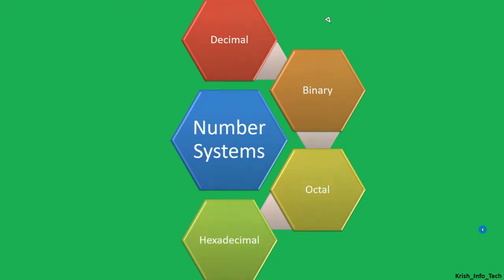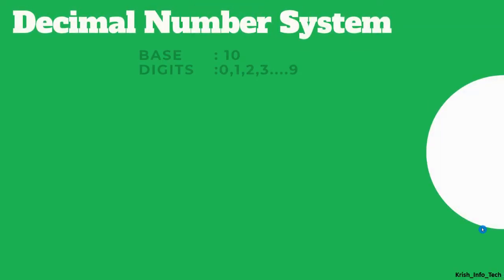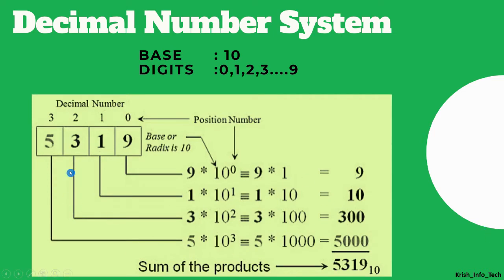Let us start with the decimal number system. The decimal number system has the base 10. For all these 4 types, we have some number as a base. You start counting from 0: 0, 1, 2, 3, 4, 5, 6, 7, 8, 9. When you reach 9, you are touching the base — the total count is 10. So the decimal number system will have the digits from 0 to 9.